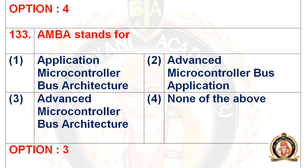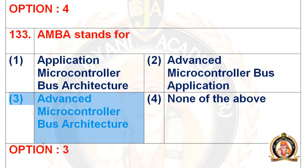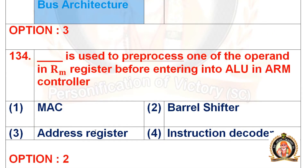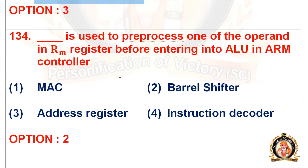Question 133: AMBA stands for. Options are application microcontroller bus architecture, advanced microcontroller bus application, advanced microcontroller bus architecture, and none of the above. The right option is option number 3, that is advanced microcontroller bus architecture.